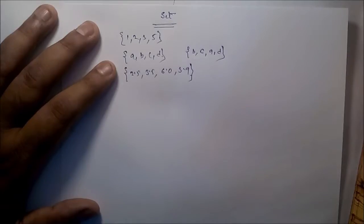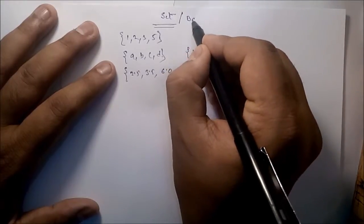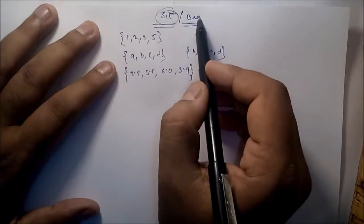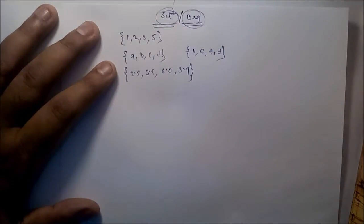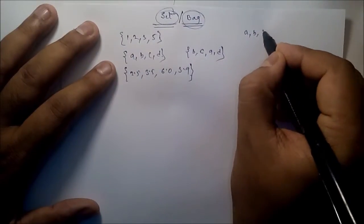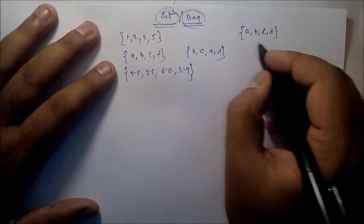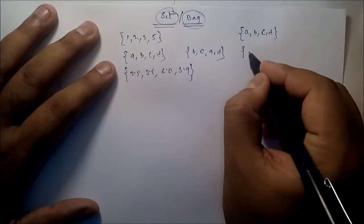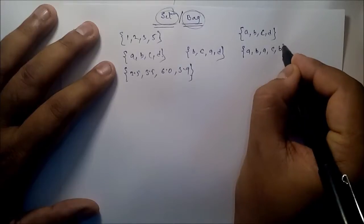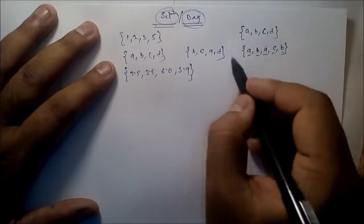There is another concept called a bag. In a set, all elements are distinct, but in a bag, elements are not necessarily distinct. If the data is a, b, c, d and all characters are distinct, it is called a set. But if it is a, b, a, c, b — with repetitions, two a's and two b's — then it is called a bag.